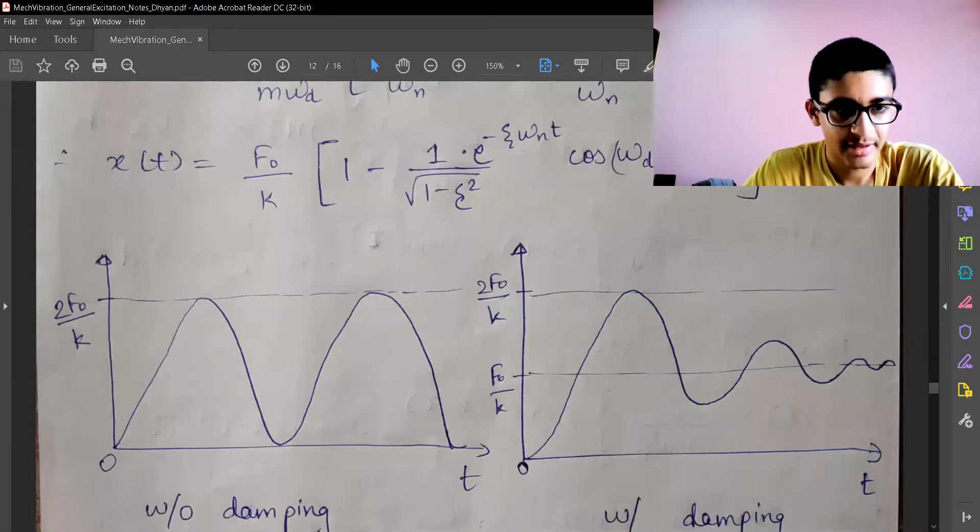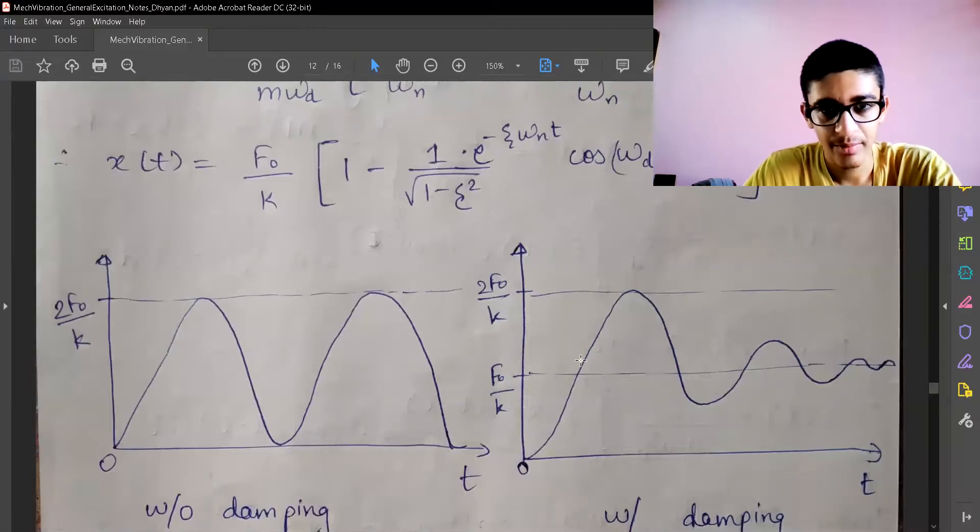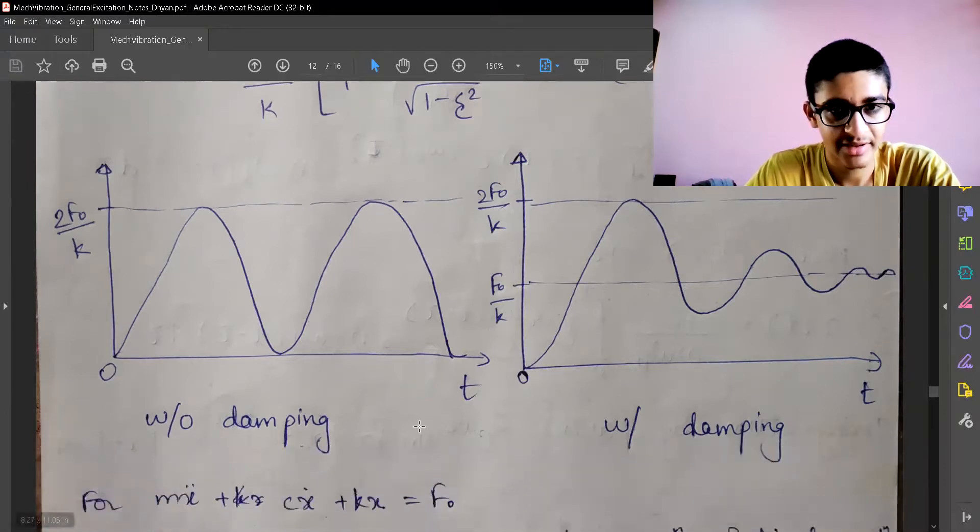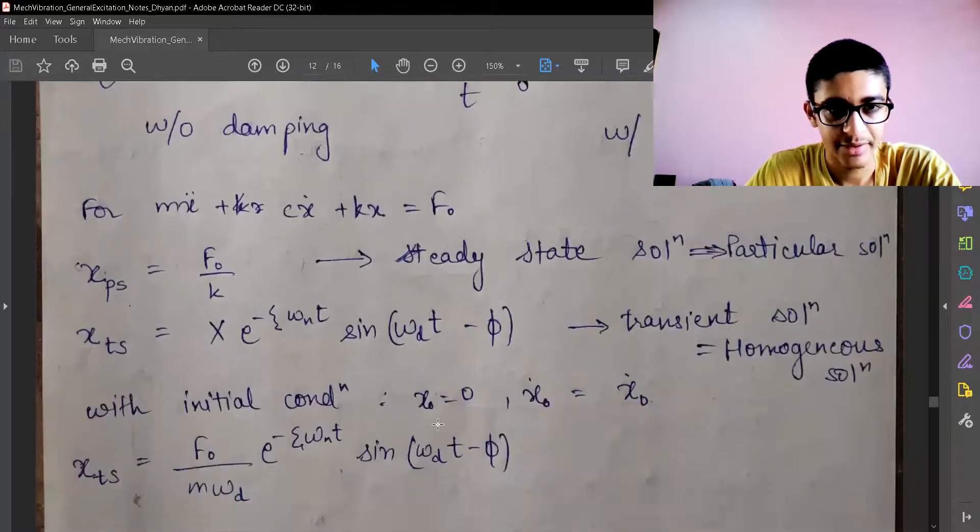This is how the response will look like. This was the thing without damping - it had maximum magnitude as 2F₀/k and minimum was zero. The same will be followed with damping, but the mean value is F₀/k and it dampens out with the mean value F₀/k at later time. This is with damping, this is without damping.